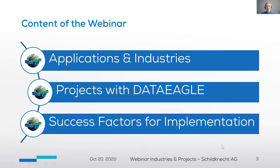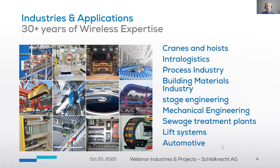Schildknecht AG, a German company, has over 30 years of wireless expertise. We were one of the first companies to start with wireless automation systems, beginning with serial signal transmission. We also hold a patent and specialize in stable radio communication, because the most important thing for PLC communication is avoiding unwanted bus errors caused by radio interferences.